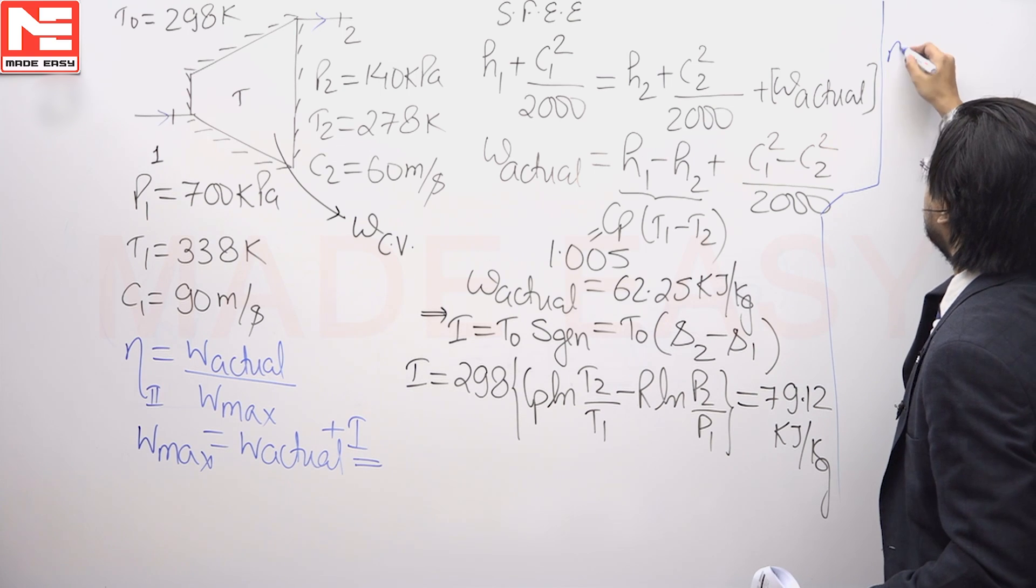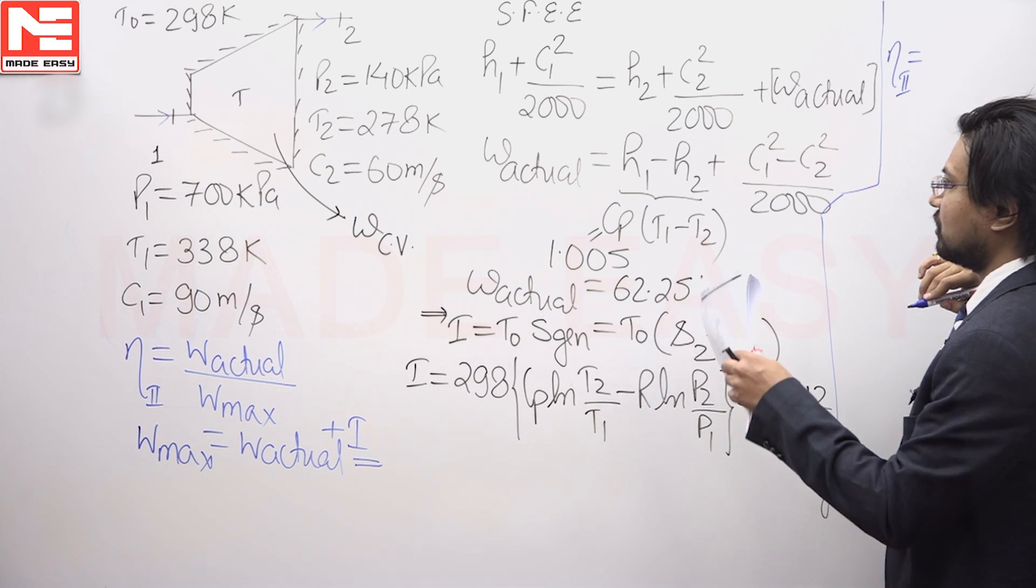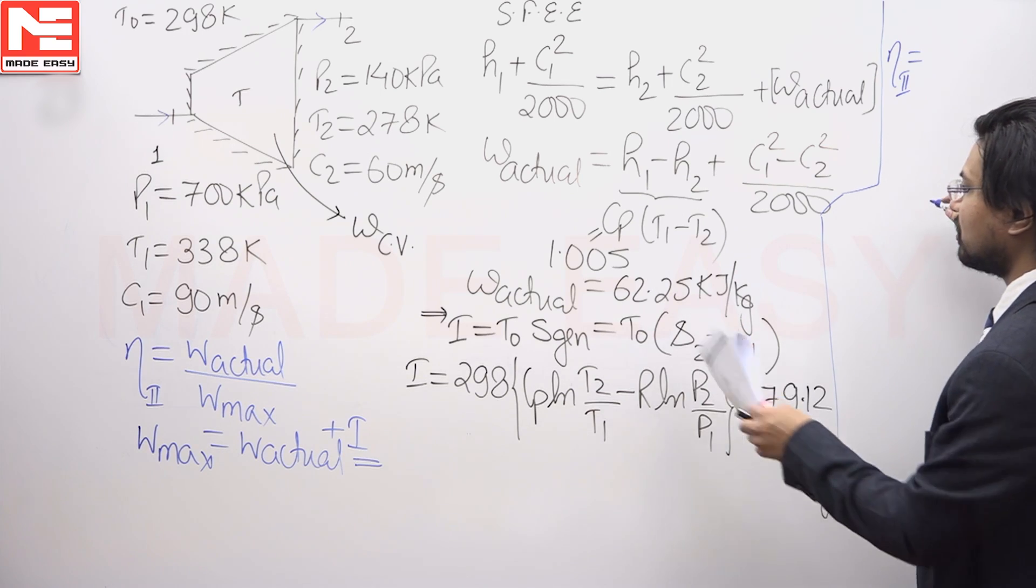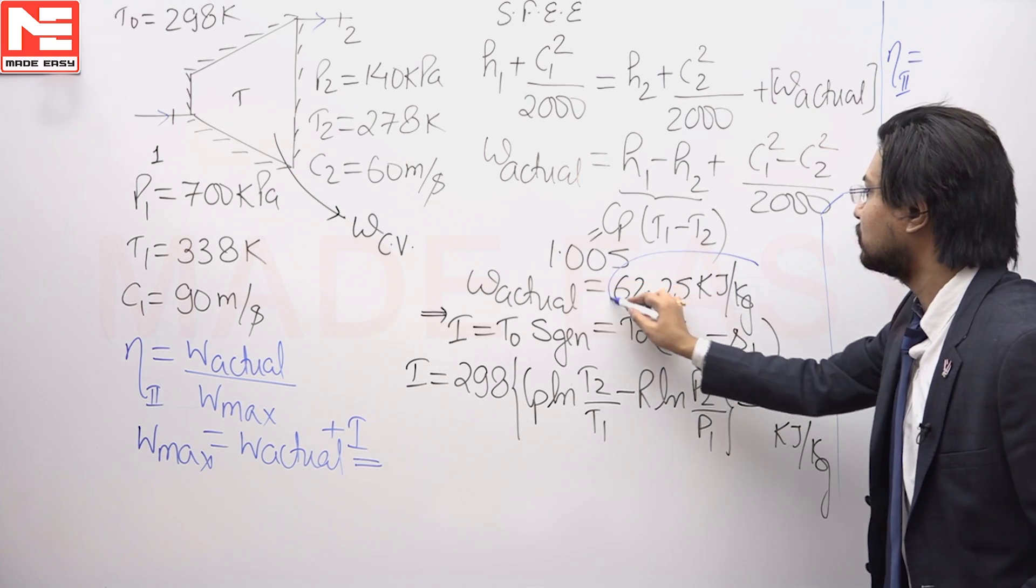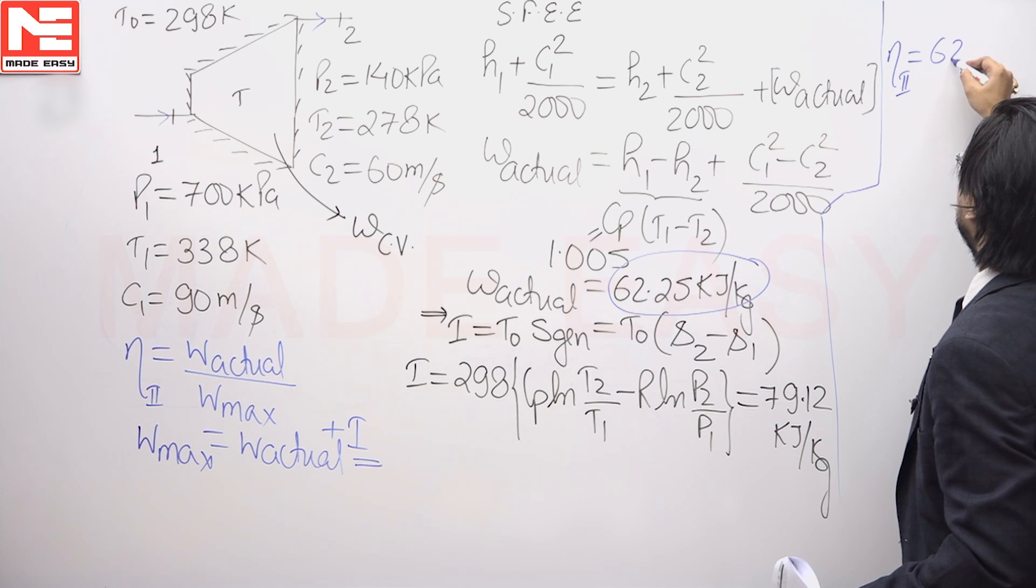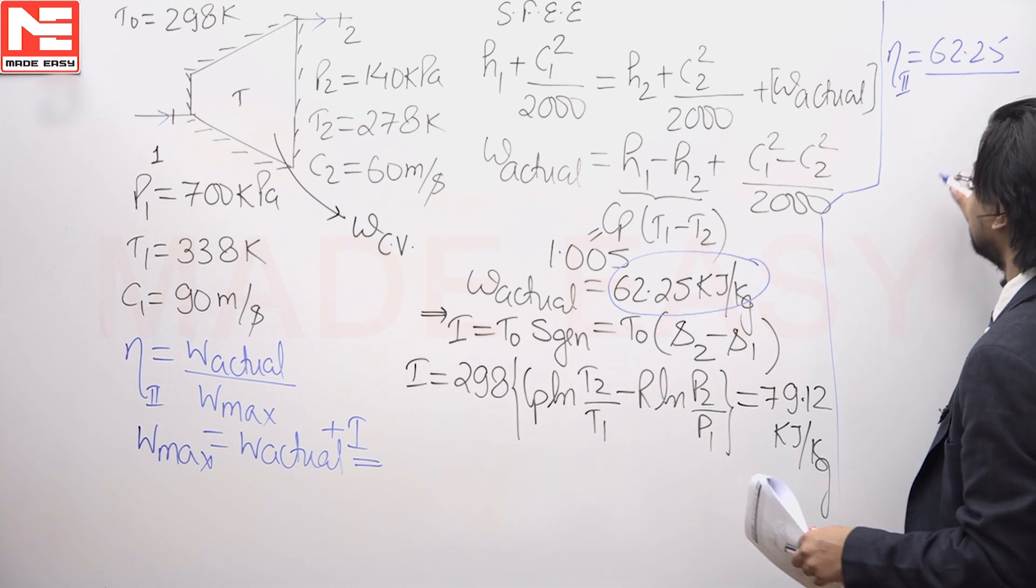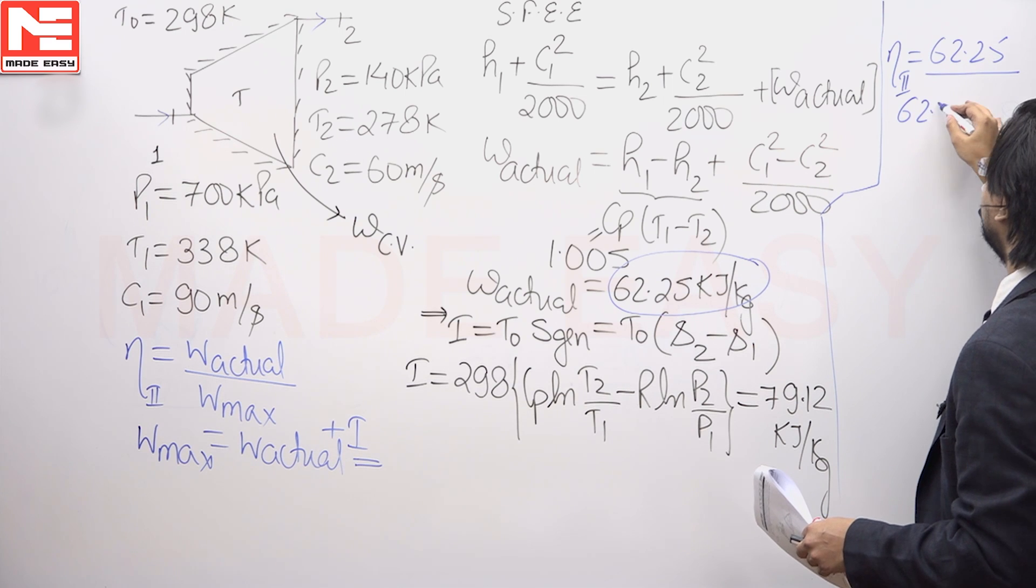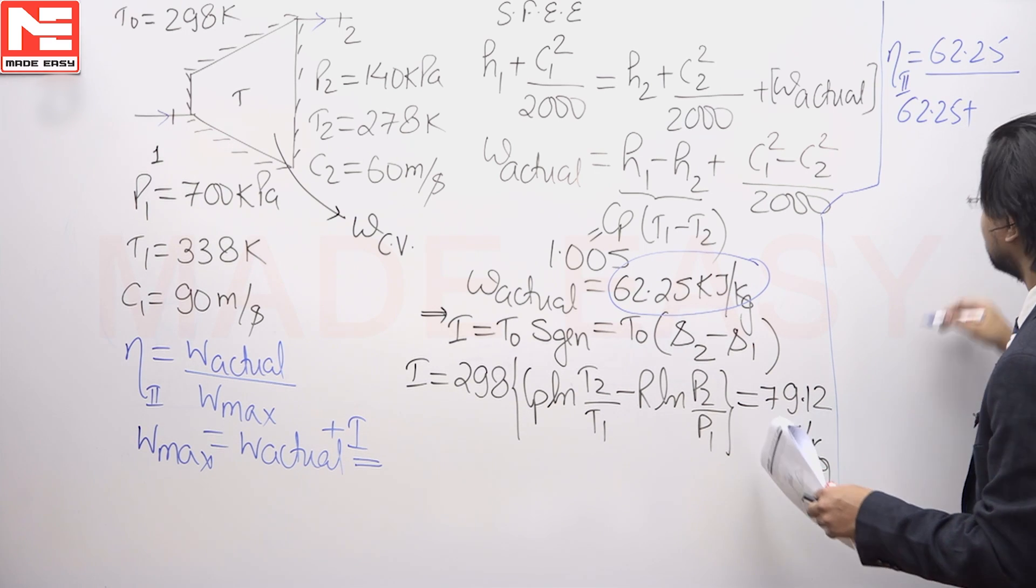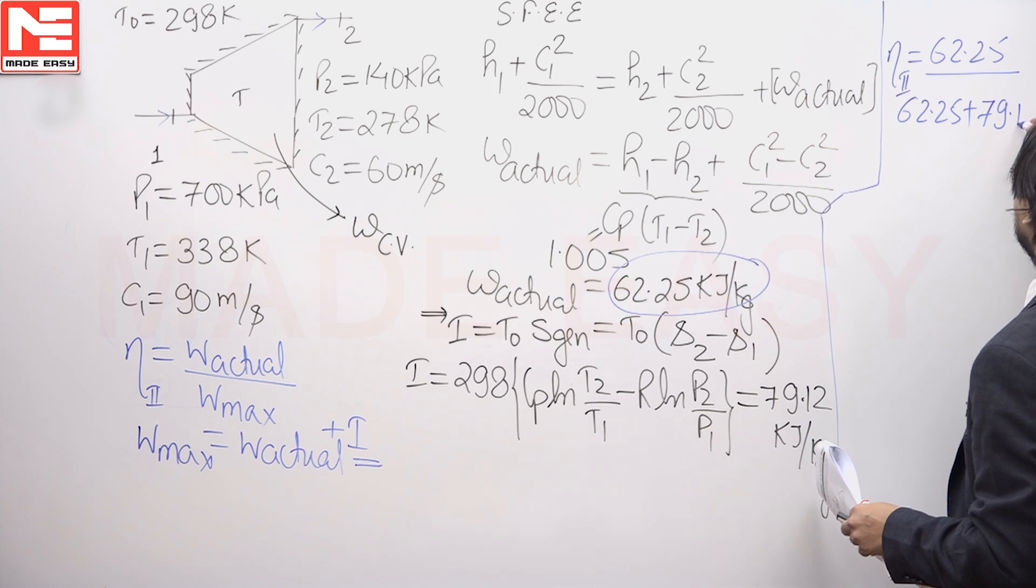I will write the second law efficiency equals the actual work which we have found out, that is 62.25, upon the maximum possible which is equal to actual plus irreversibility, that is 62.25 plus the irreversibility 79.12.